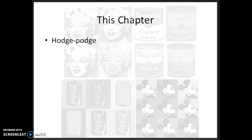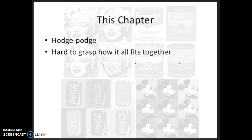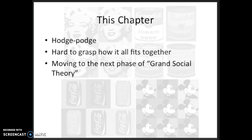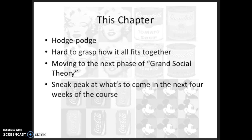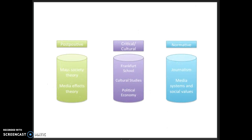This chapter is a bit of a hodgepodge. Parts of it fit together well and inform subsequent parts, while other sections seem tangential and it's kind of hard to grasp exactly how it all fits together. Try to think of it this way: we're moving on from mass society theory to the next phase of grand social theory attempting to explain the media and our relationship with it. We'll examine the cultural trend in mass communication theory over the next four weeks, so this week is really your sneak peek into what's to come.